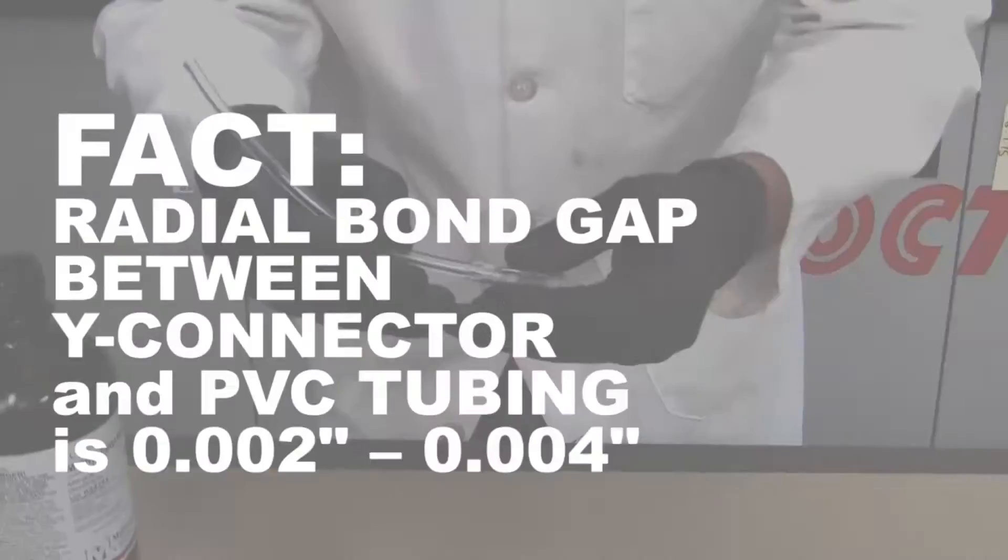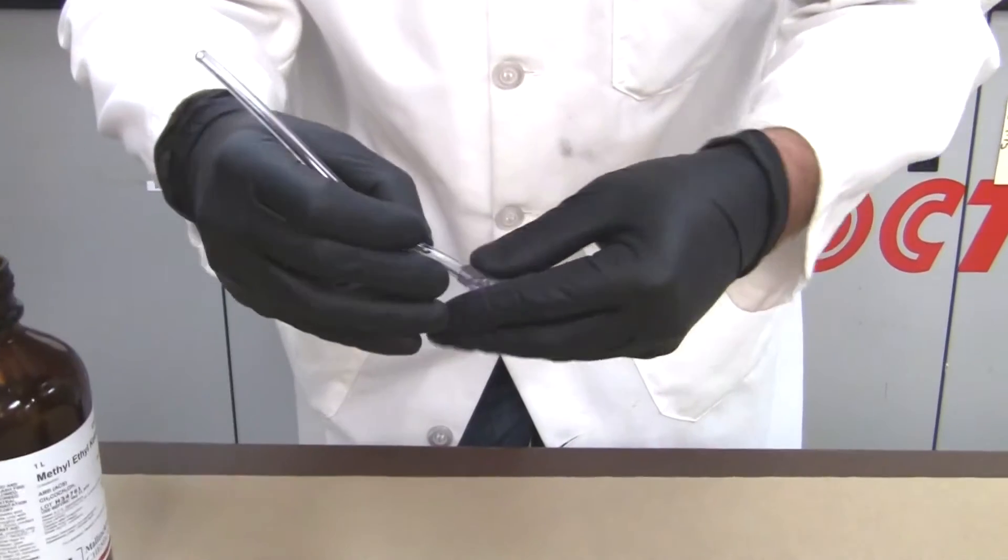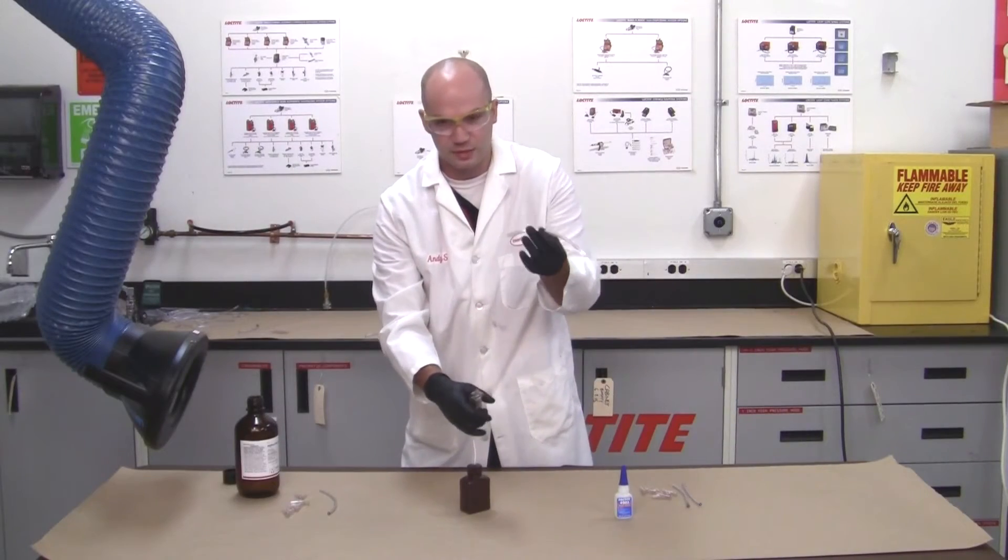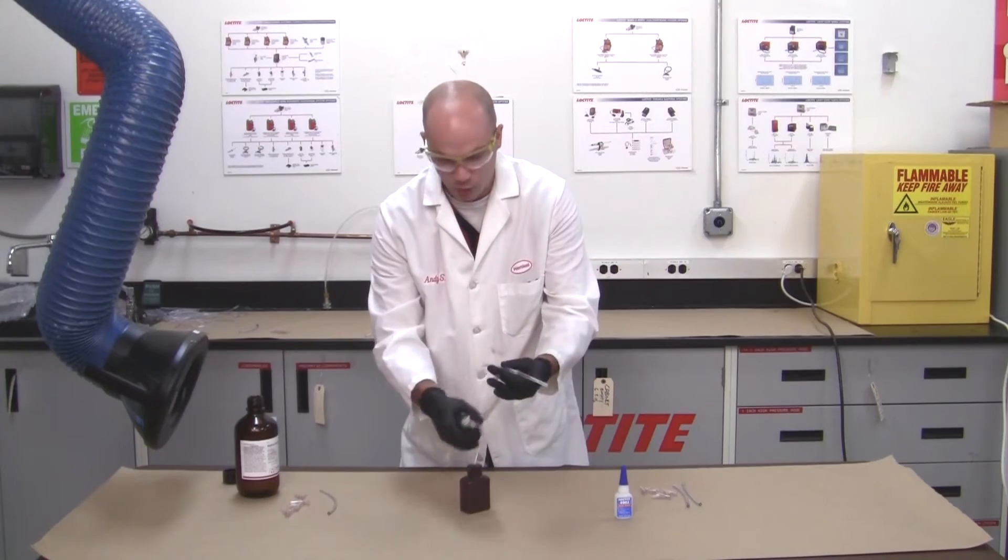We have a little bit of solvent on the tubing, insert it in, hang our two-pound weight, and you can see that it's not able to support the two-pound weight.